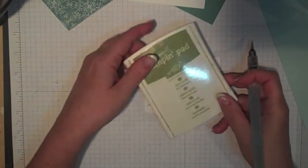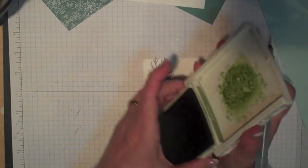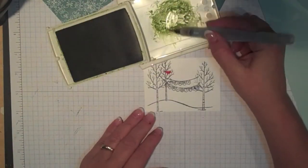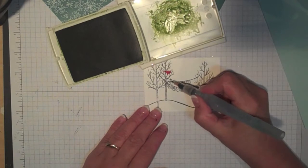Next I can take Old Olive and my aqua painter and I'm just going to pull the color off the lid and color in the words on the banner.